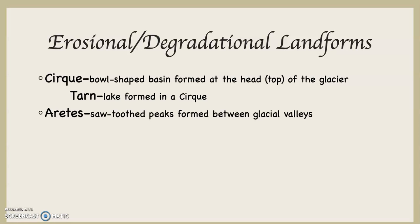An arête — a French word with a circumflex over the first E — refers to sawtooth peaks formed between glacial valleys. If you imagine two glaciers running in parallel valleys with a mountain in between them, because of plucking and abrasion — the scraping and grinding of the glacier — the mountain in between will slowly be worn down and thinned out. The last thing left at the top is this ridge of sharp, sawtooth peaks, like a serrated bread knife, that we call an arête.